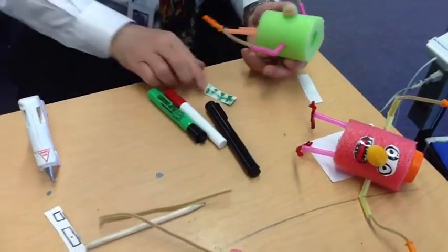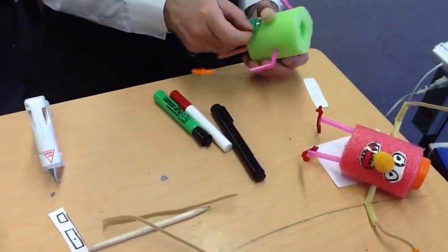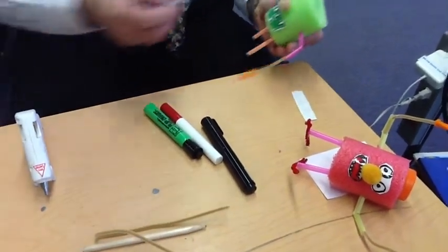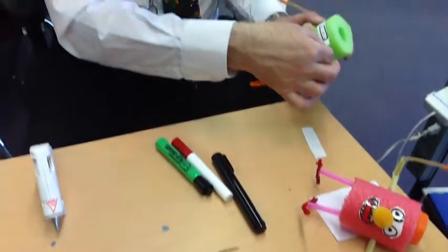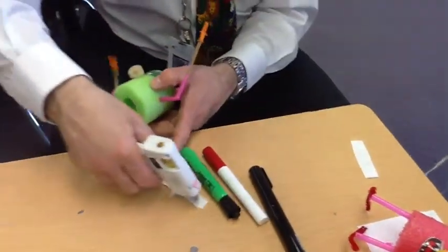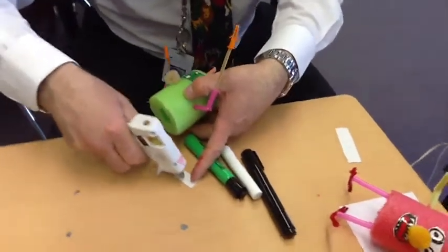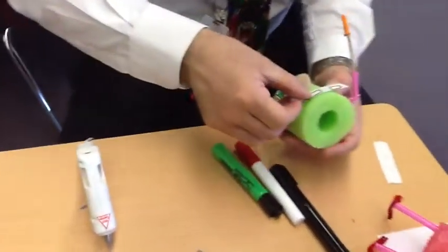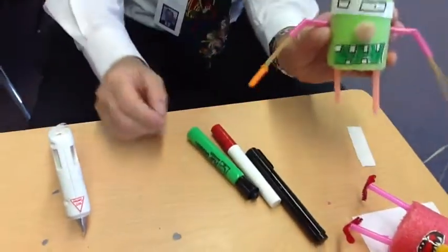You might be able to use another kind of glue if you don't have a glue gun at home. Just make sure it sticks to plastic. And we could use, let's use the anime style eyes. I like those. There we go.